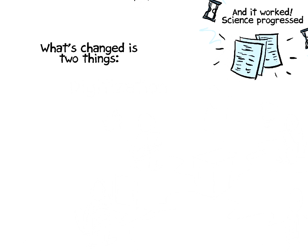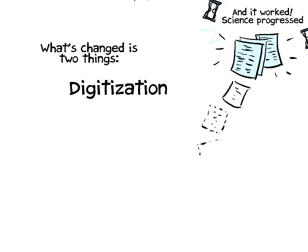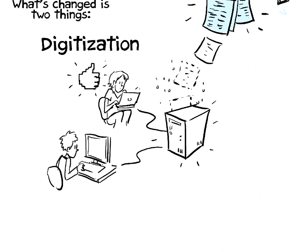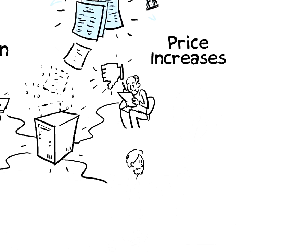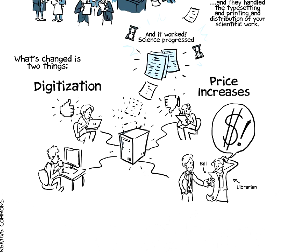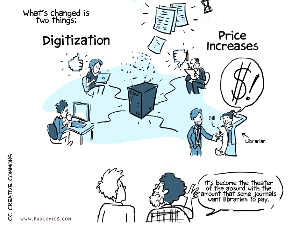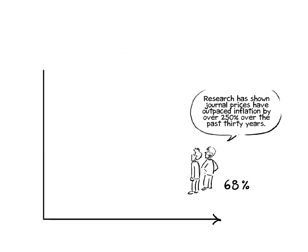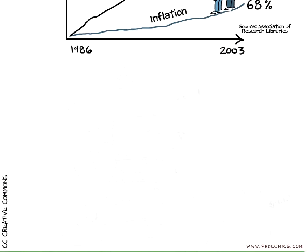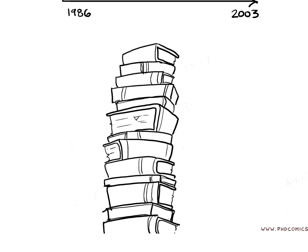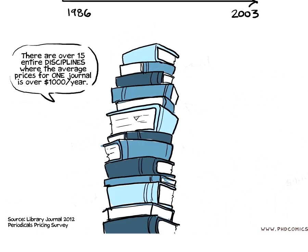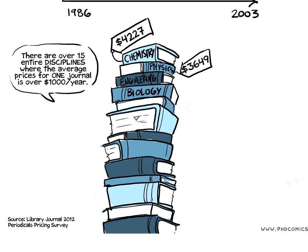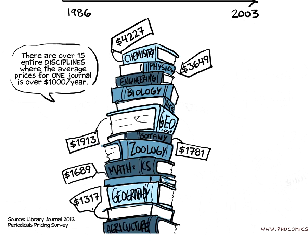What's changed is really two things in essence. First is digitization — you can now do everything electronically instead of printing it. And the second is that the journals started ratcheting up the price of subscriptions. Those two things came to a head where it's become almost the theater of the absurd with the amount that some journals want libraries to pay. Research has shown that journal prices have outpaced inflation by over 250 percent over the past 30 years. There are over 15 entire academic disciplines where the average price for one journal is over $1,000 per year. In chemistry, the average title is $4,227, and in physics, $3,649.